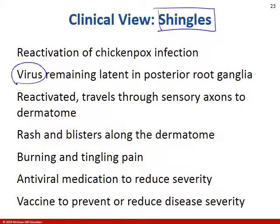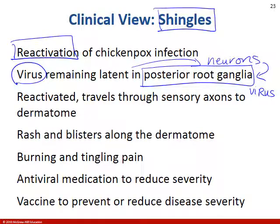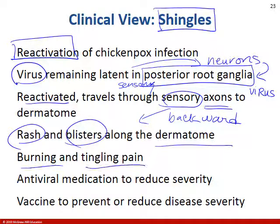Shingles is caused by a virus that can lie dormant in the posterior root ganglion neurons. When reactivated — often when the immune system is suppressed — the virus travels backwards through the sensory axons, causing rash, blistering, burning, and tingling in the skin along that dermatome. A vaccine is available to prevent or reduce the severity of shingles.